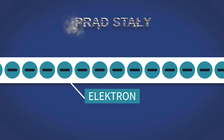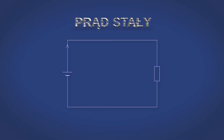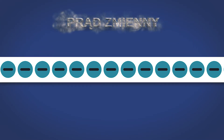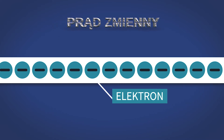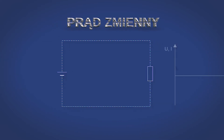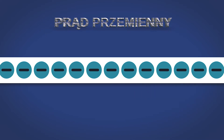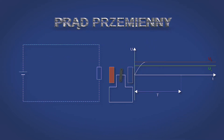Prąd elektryczny jest to uporządkowany ruch ładunków elektrycznych. Rozróżniamy prąd stały i prąd zmienny. Prąd stały charakteryzuje się stałym kierunkiem przepływu oraz wartością natężenia. Prąd zmienny zmienia wartość swojego natężenia w czasie. Specyficznym rodzajem prądu zmiennego jest prąd przemienny, gdzie wartości chwilowe natężenia przyjmują w powtarzalny i okresowy sposób na przemiennie wartości dodatnie i ujemne. W praktyce najczęściej mamy do czynienia z prądem i napięciem o przebiegu sinusoidalnym.